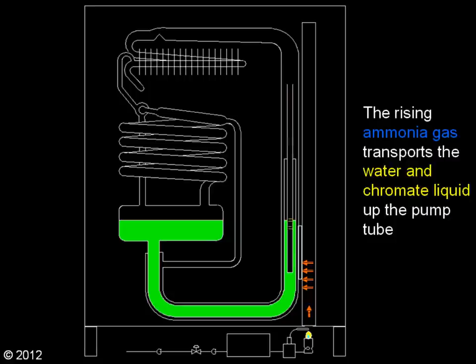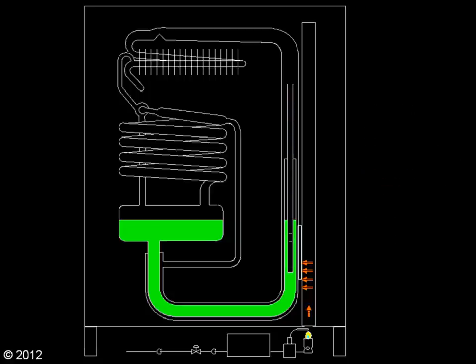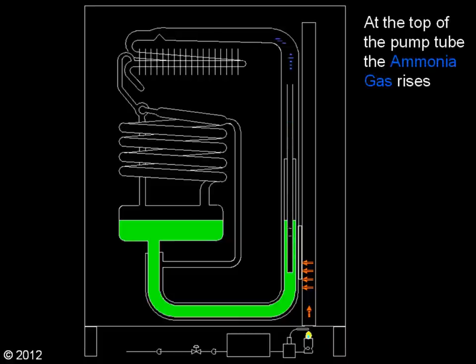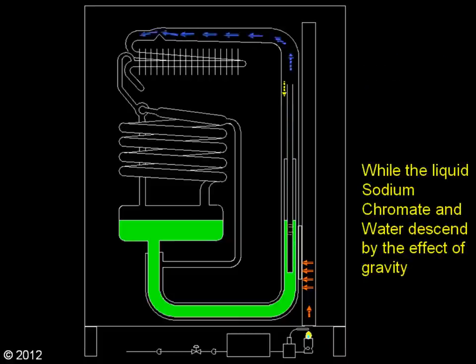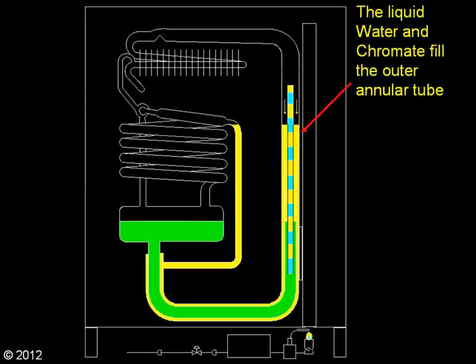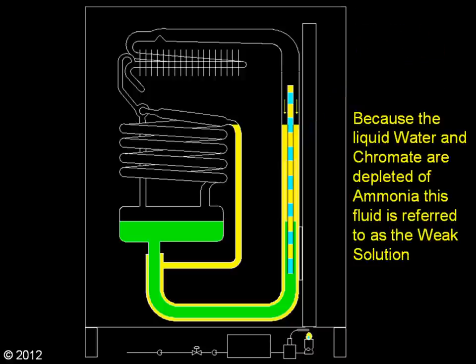The rising ammonia gas transports the water and chromate liquid up the pump tube. At the top of the pump tube, the ammonia gas rises, while the liquid sodium chromate and water descend by the effect of gravity. The liquid water and chromate fill the outer annular tube. Because the liquid water and chromate are depleted of ammonia, this fluid is referred to as the weak solution.